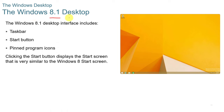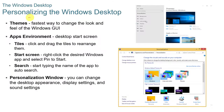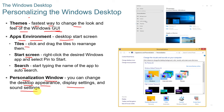Windows 8.1 went back to the traditional Windows 7 look with a taskbar, start button, and pinned program icons. Users can personalize their desktop using themes, which are the fastest way to change the look and feel of the Windows GUI. You can also change desktop appearance, display settings, and sound settings.